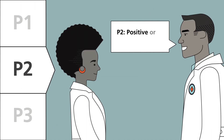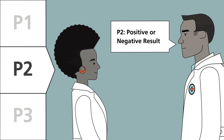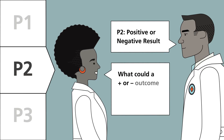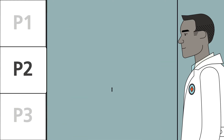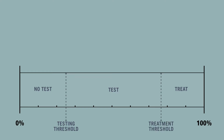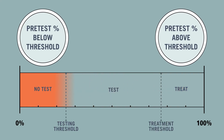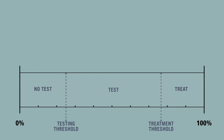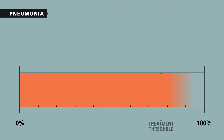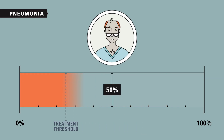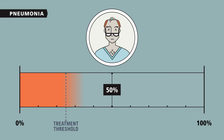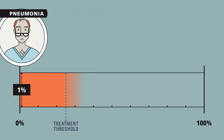The second P is probability change with a positive or negative result. Based on the determined pretest probability, clinicians must ask: what could a positive or negative outcome mean for disease probability? A diagnostic test won't help when the pretest probability is either very high or very low — it might even cause confusion. Doctors need different degrees of certainty for different actions. For pneumonia, the treatment threshold — the probability where treatment is net beneficial — is approximately 25%. So if the pretest probability of pneumonia is 50%, there may be no benefit to testing. If the pretest probability is very low, say around 1%, even a positive chest x-ray is not enough to cross the threshold for treatment.